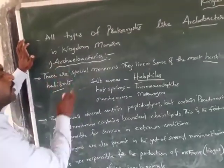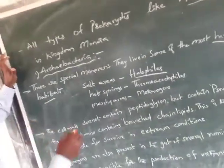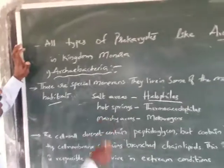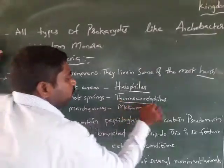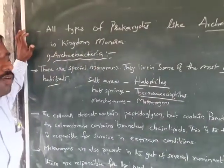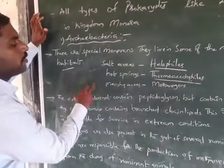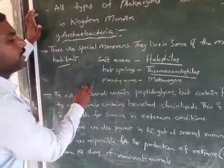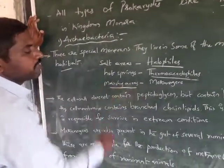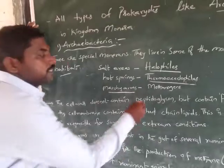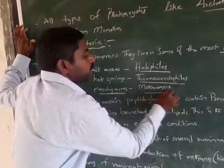Archaebacteria that live in hot springs are called thermoacidophils. Those that live in marshy areas are called methanogens.